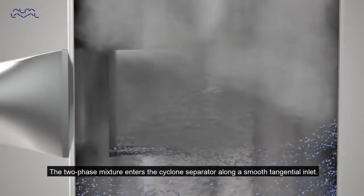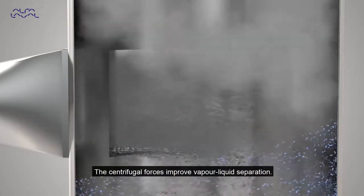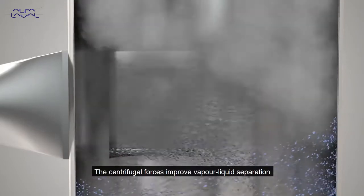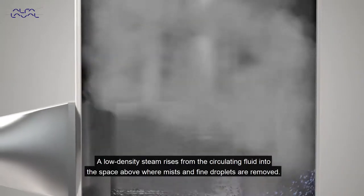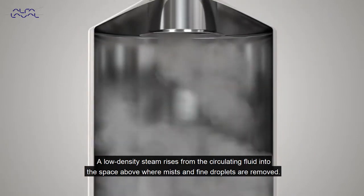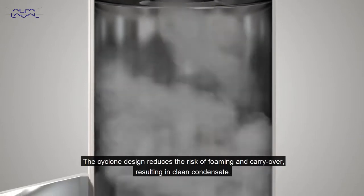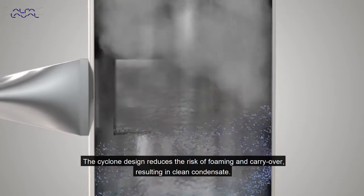The two-phase mixture enters the cyclone separator along a smooth tangential inlet. The centrifugal forces improve vapor-liquid separation. Low-density steam rises from the circulating fluid into the space above where mists and fine droplets are removed. The cyclone design reduces the risk of foaming and carryover, resulting in clean condensate.